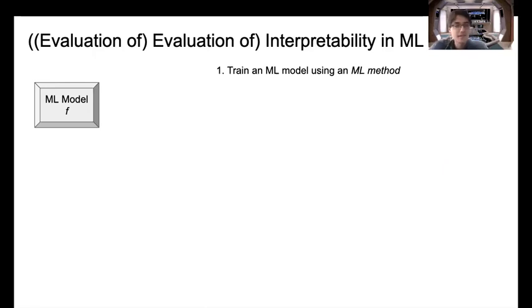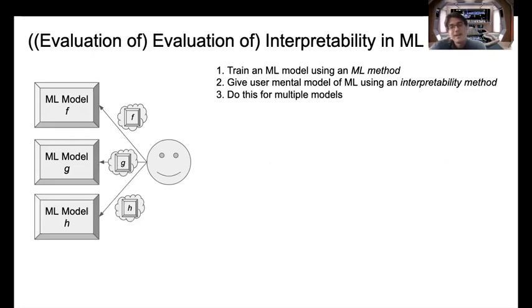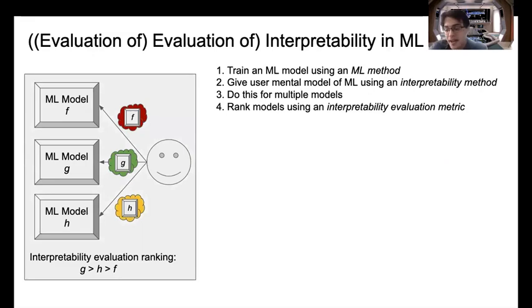The starting point is that we train a machine learning model, let's call it F, using some machine learning method. We then want to explain that model to some user or group of users, and to do that we need to use some kind of interpretability method or visualization. Maybe we don't just have one model, but multiple, and we want to determine which is the most interpretable to this group of users.